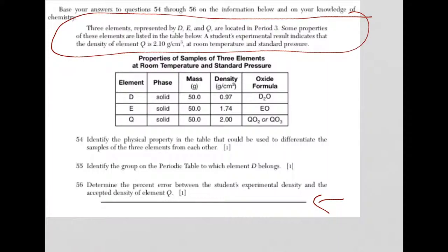So you're dealing with elements D, E, and Q. They're located in period three of the periodic table. You have properties listed below. You're also given that the student's experimental result indicates the density of element Q is 2.10 grams per centimeter cubed. So this might be important as you go through the questions. Let's take a look.